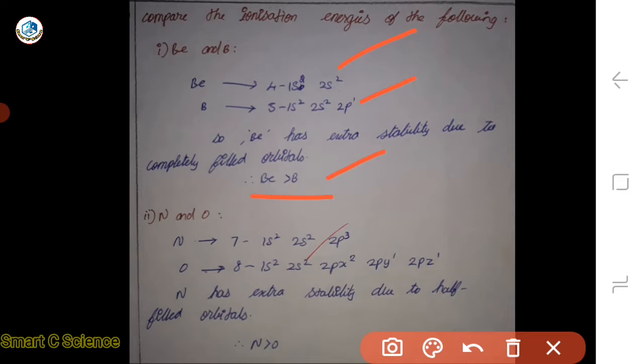Ionization energy is stable. When the boron electron is removed, the system remains stable. So the ionization energy is too low for boron because removing an electron from Be actually requires more energy due to its stable completely filled configuration.